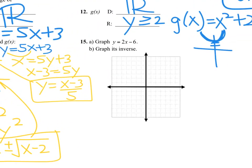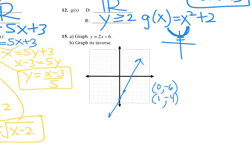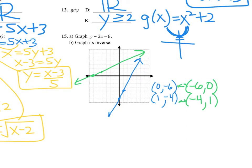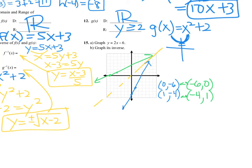Number 15 — you'll have one of these too. Graph 2x minus 6: go to negative 6 on the y-axis and count up 2, over 1. Two distinct points on the line are (0, negative 6) and (1, negative 4). To find the inverse, switch those coordinates: (0, negative 6) becomes (negative 6, 0), and (1, negative 4) becomes (negative 4, 1). Graph those points and connect them — that's the inverse. It should be a reflection over the diagonal. Page 1 done.